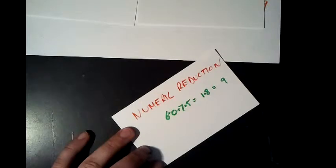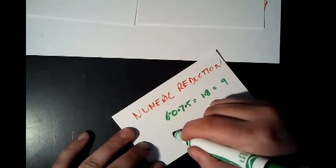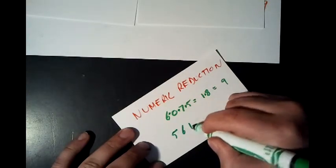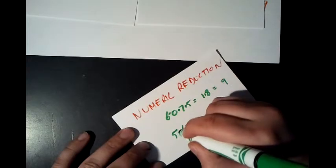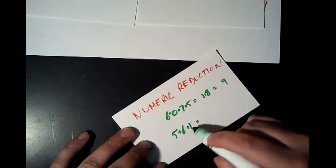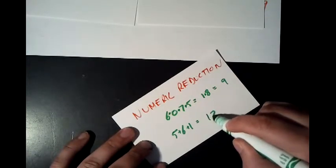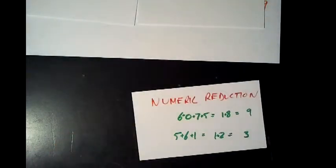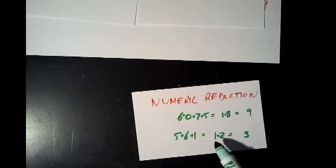Let's try it one more time to get a feel for this. Let's do 561. We add up all the digits: 5 + 6 + 1 gives us 12, and 1 + 2 gives us 3. So the numeric reduction of 561 is 3. And also, the numeric reduction of 12 is 3.